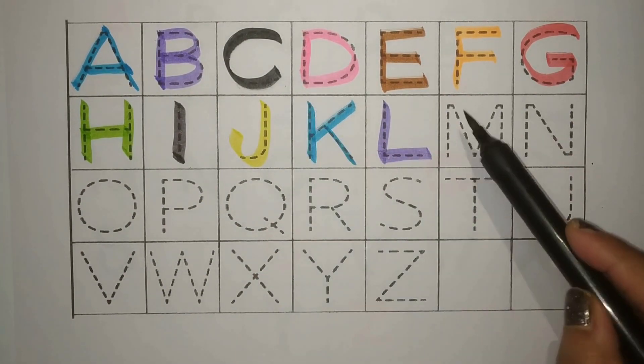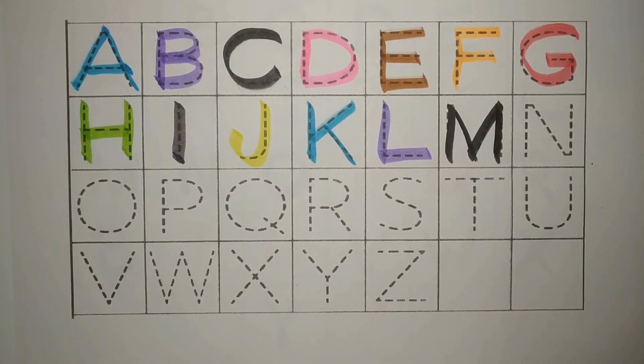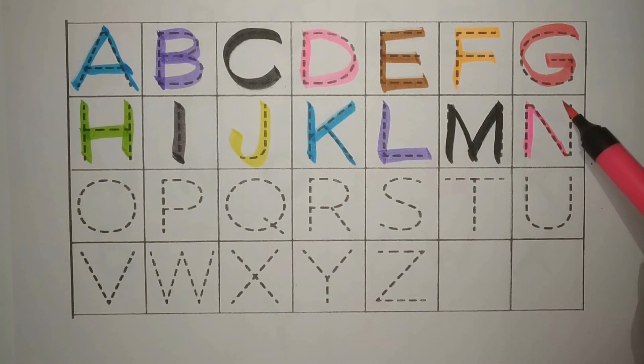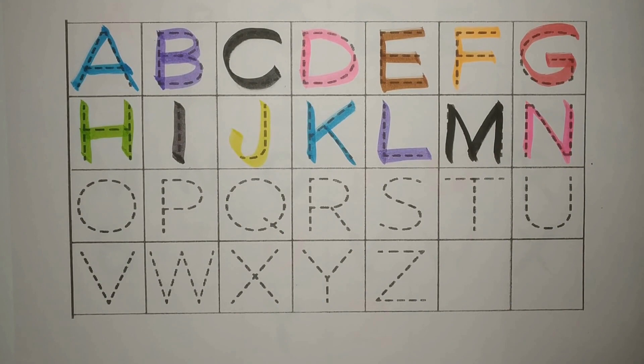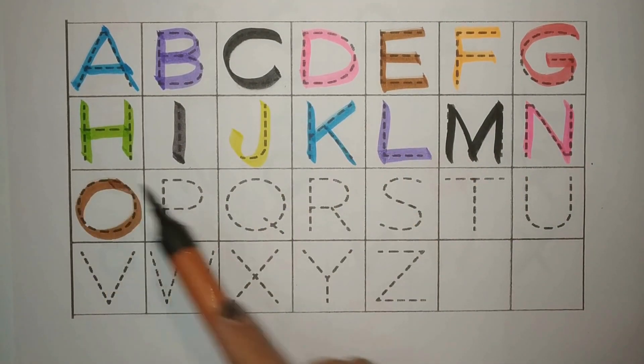Black M for Monkey. The Monkey Lives on the Tree. Pink N for Nest, Ghosla. Brown O for Orange, Santra.